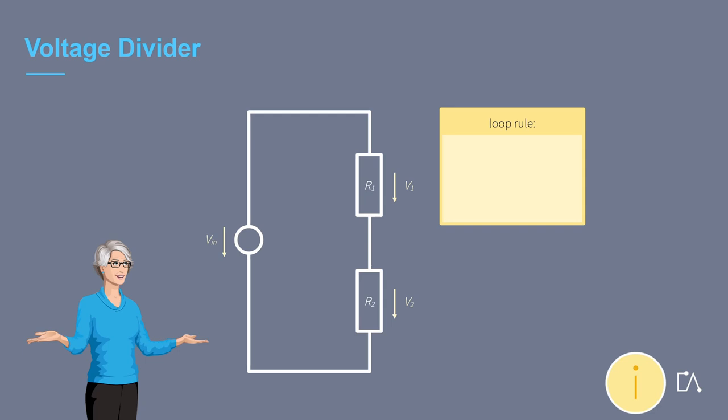If you want to repeat the loop rule, click on the yellow info button in the bottom right corner. We go through the loop clockwise and start with V1, this gives us the formula V1 plus V2 minus V in equals zero.